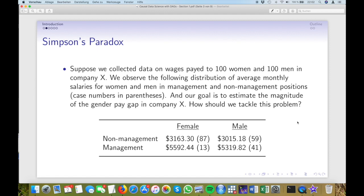Let's say we collect the following data. Among the female employees, we find 87 women in a non-management position with an average monthly salary of $3,163.30. The other 13 women work in a management position and they earn $5,592.44 a month. For the male employees, we find 59 men in a non-management position with an average monthly salary of $3,015.18, and 41 men work in a management position and they earn $5,319.82 a month. Now, how should we compute the gender pay gap for company X?